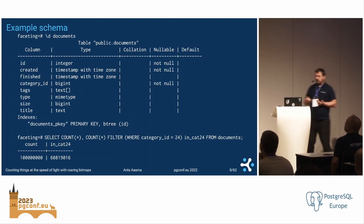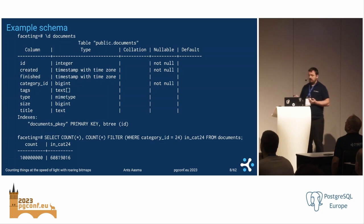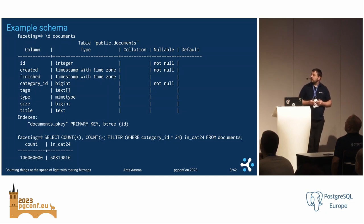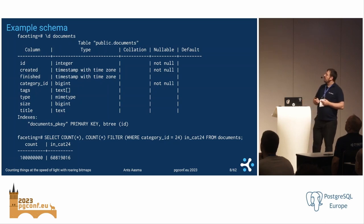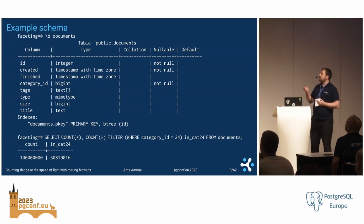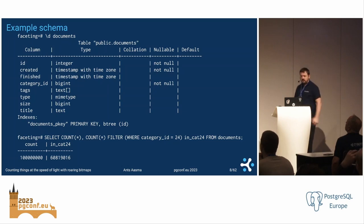For this talk, I'll use this example document schema. It's not something real, but good enough for our purposes. We have a couple of date fields, a category, some type fields, and we have 100 million rows in there. We will be looking at the worst case scenario where we have a filter on something that is most of the table — category 24 that is 60 million rows, almost 61 million.